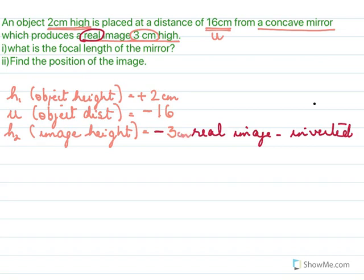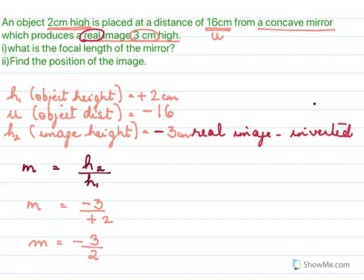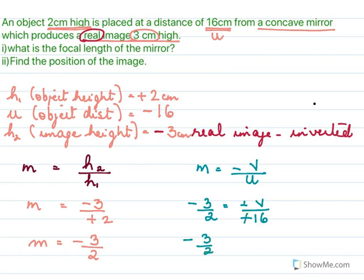We start with magnification = h2/h1 = −3/2. We also know magnification = −v/u, so −3/2 = −v/(−16). Solving: v = −(3/2)(16) = −24 centimeters. Now that we know v = −24 and u = −16, we can find the focal length using the mirror formula.